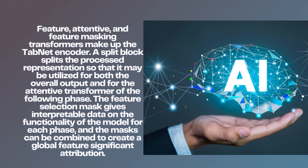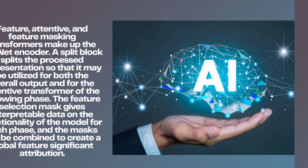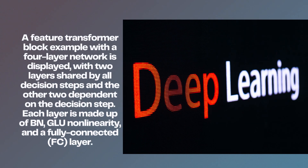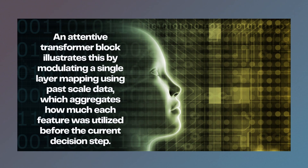Key points to remember: Feature, Attentive, and Feature Masking Transformers make up the TabNet encoder. A split block splits the processed representation so that it may be utilized for both the overall output and for the attentive transformer of the following phase. The Feature Selection Mask gives interpretable data on the functionality of the model for each phase, and the masks can be combined to create a global feature significant attribution. A Feature Transformer block is included in each phase of the TabNet decoding, with two layers shared by all decision steps and the other two dependent on the decision step. Each layer is made up of BN, GLU nonlinearity, and a fully connected (FC) layer. An attentive transformer block modulates a single layer mapping using past scale data, which aggregates how much each feature was utilized before the current decision step.